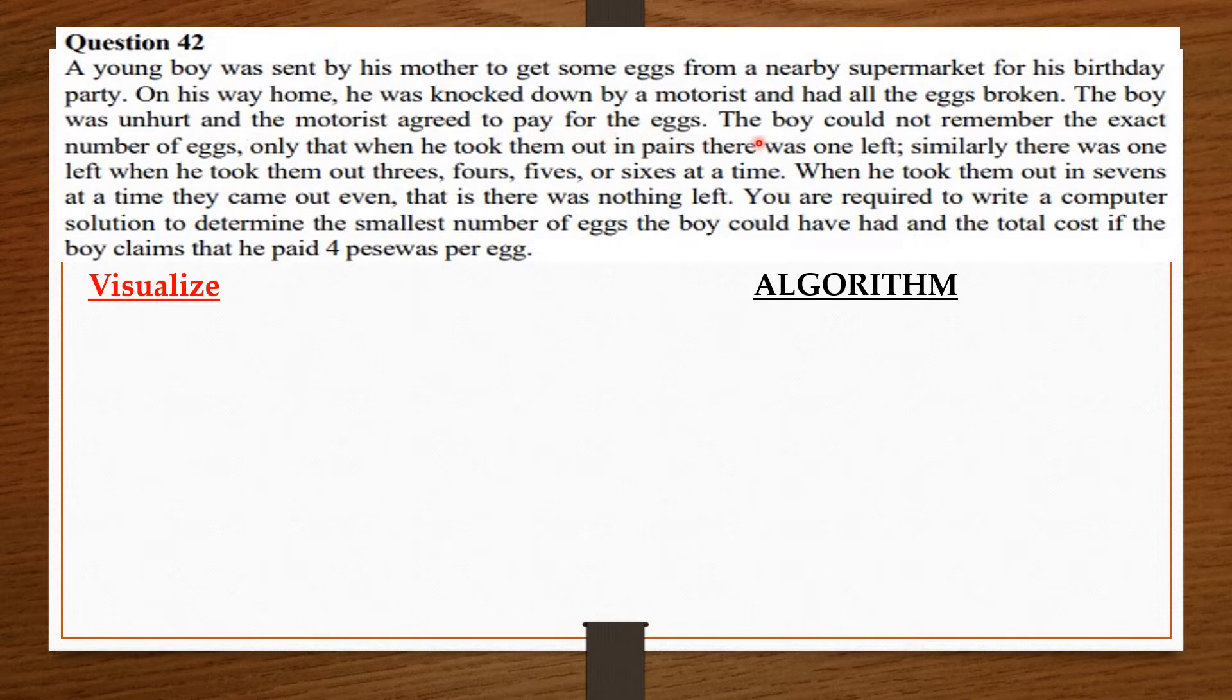The boy was unhurt and the motorist agreed to pay for the eggs. The boy could not remember the exact number of eggs, only that when he took them out in pairs, there was one left. Similarly, there was one left when he took them out in 3s, 4s, 5s or 6s at a time. When he took them out in 7s at a time, they came out even. That is, there was nothing left.